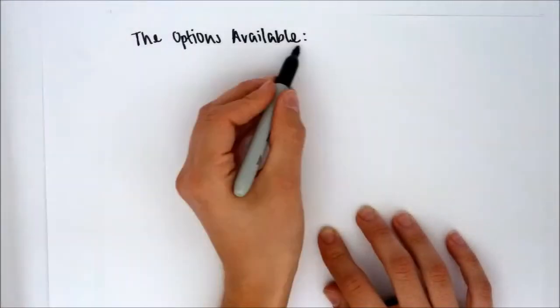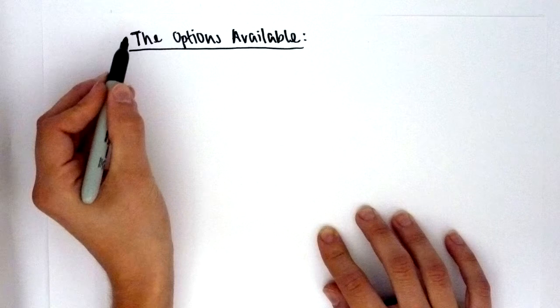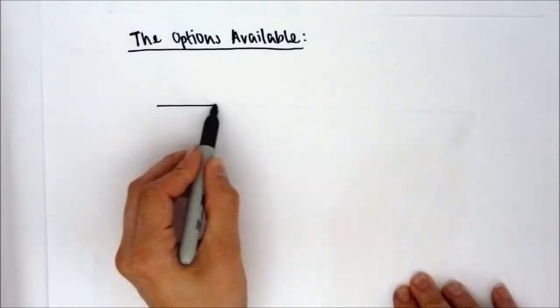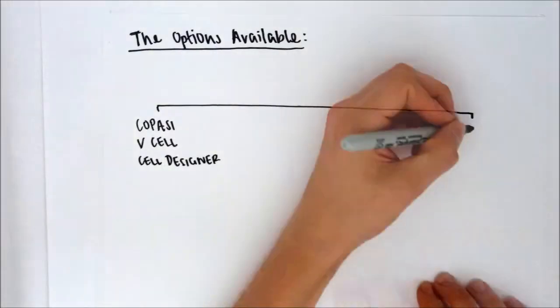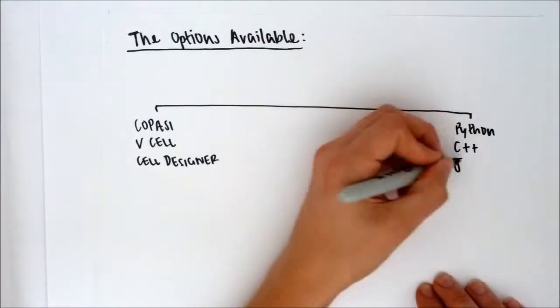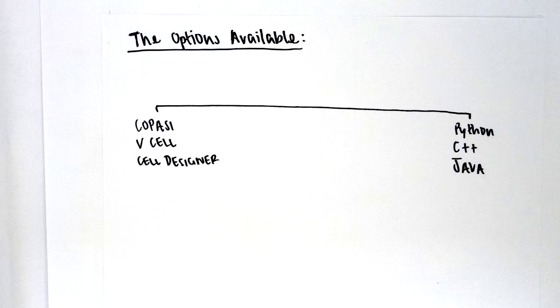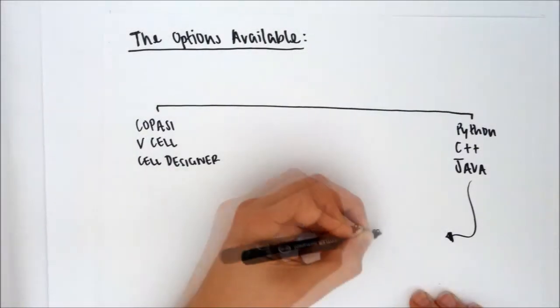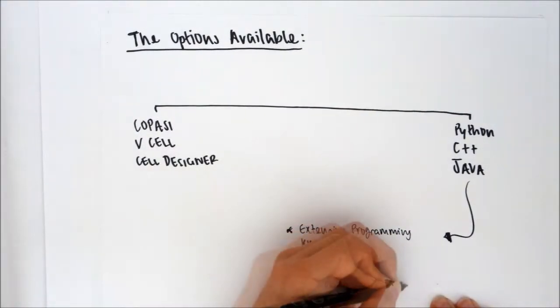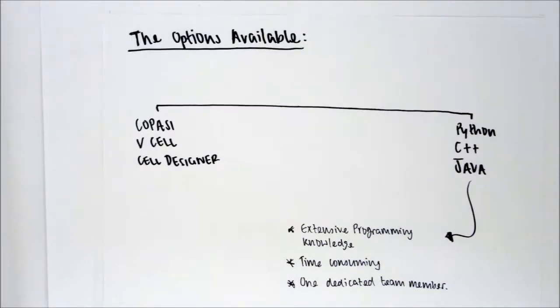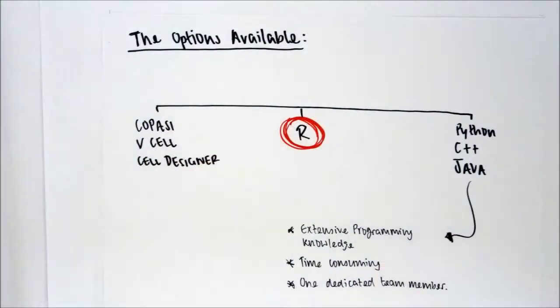We have separated the different types of programming software into two main groups. On the left, we have Copasi, V-Cell and Cell Designer. On the right, we have Python, C++ and Java. They have unlimited potential when it comes to writing code, but require extensive programming knowledge. This is time consuming and would need one dedicated team member. R fits perfectly into the middle of these two categories.